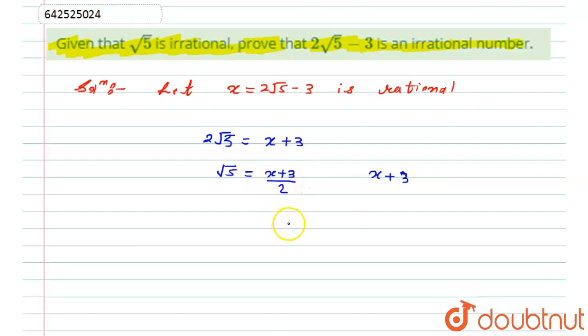also will become a rational number, which is nothing but a contradiction. So from here can I say that hence